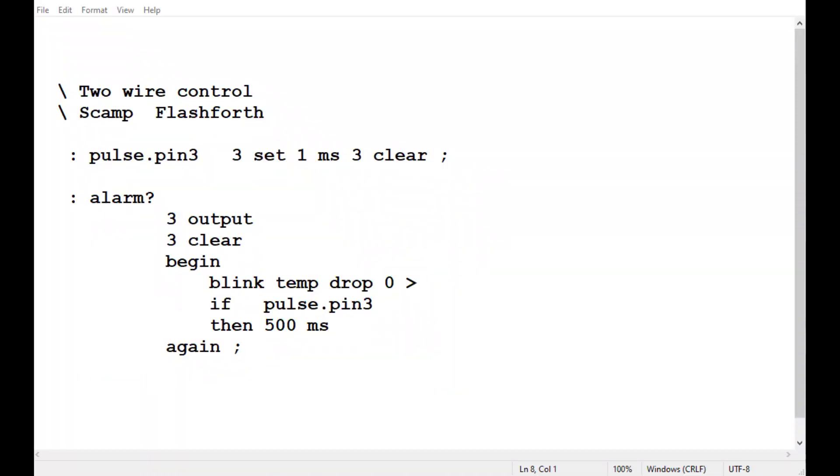Okay, here's the code running on the SCAMP board and it's written in FlashForth. It's very simple, it's only a few lines. So the first word we see is pulse.pin3. Now when we run pulse.pin3, GPIO pin 3 will go high for one millisecond then go low. So we're going to get a one millisecond pulse. So pin 3 is set so it goes high for one millisecond then it goes low. Now that pulse is going to be fed into the base of the NPN transistor, so every time we run pulse.pin3 the power supply will be shorted out for one millisecond.